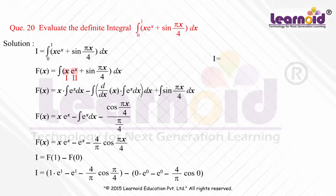i equals e minus e minus (4/π)·(1/√2) minus [0 minus 1 minus (4/π)·1], which simplifies further.